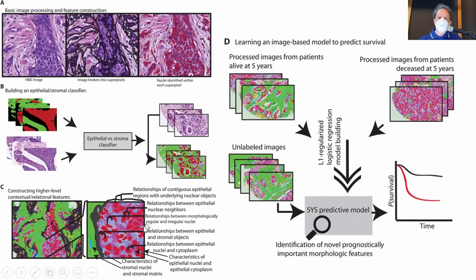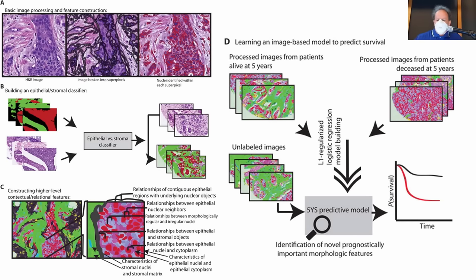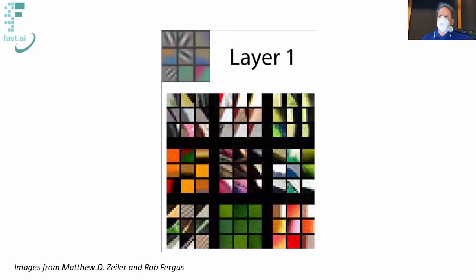Once they had all these features, they fed them into a machine learning model — in this case logistic regression — to predict survival. It was very successful, but it's not something I could create for you in a minute at the start of a course. The difference with neural networks is they don't require us to build these features — they build them for us. In 2015, Matt Zeiler and Rob Fergus took a trained neural network and looked inside it to see what it had learned. We don't give it features, we ask it to learn features.